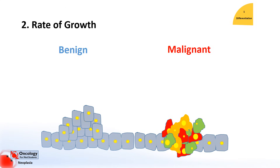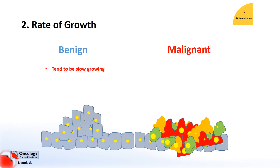Next is rate of growth. In general, the rate of growth is related to the degree of differentiation. Well-differentiated benign and malignant tumors tend to grow more slowly; less well-differentiated malignant tumors tend to be fast growing. But growth is a complicated issue and there are exceptions — some benign tumors grow quickly while some malignant tumors grow slowly, but in general these rules hold true.